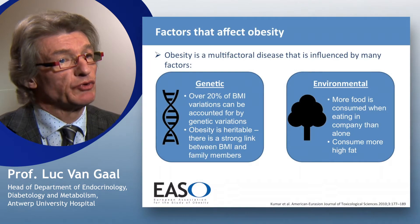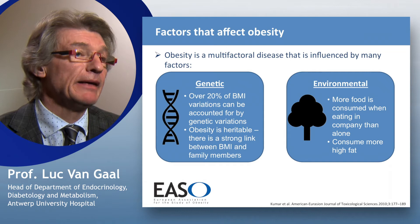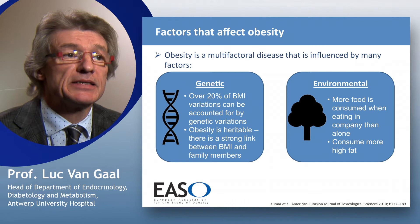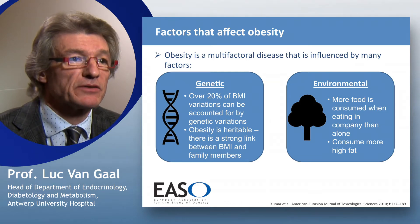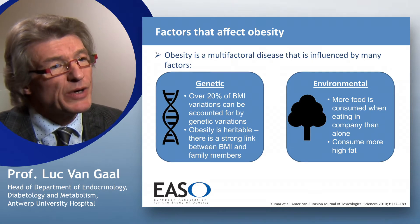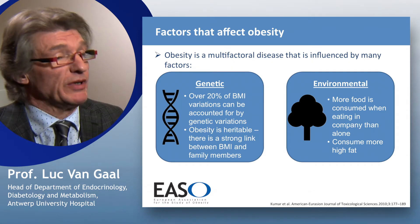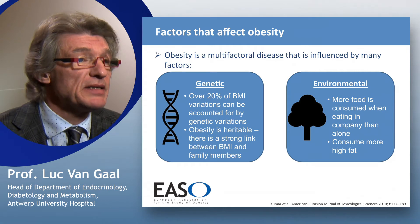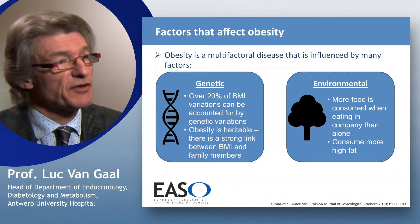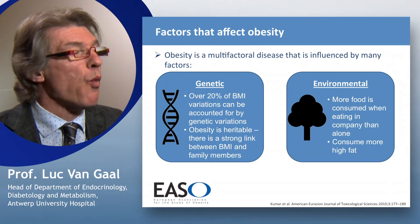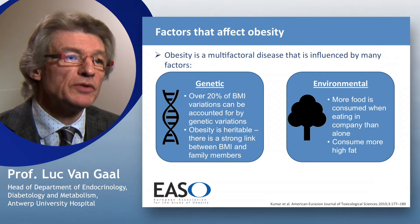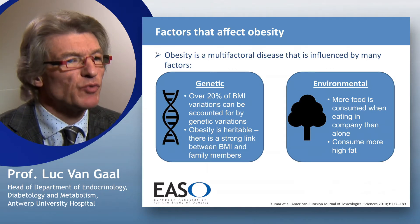What we know to start with is that obesity is a multifactorial disease, which implies that it is influenced by many factors. To start with the genetic ones: roughly 20%, or maybe over 20%, of the body mass index variability can be accounted for by genetic variations. One mutation or polymorphism may become more or less important, but it is roughly 20 to 30%.